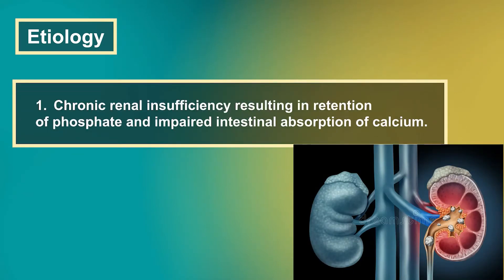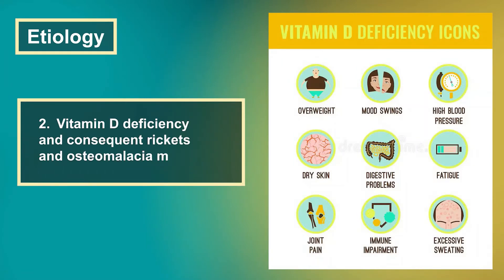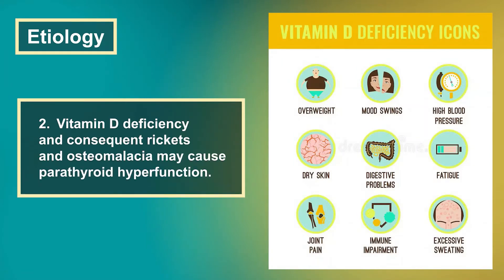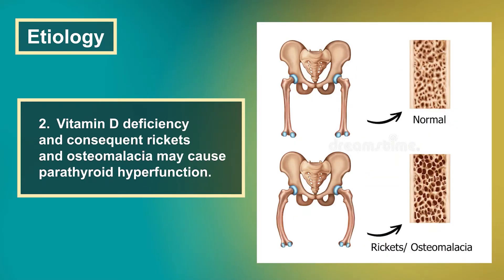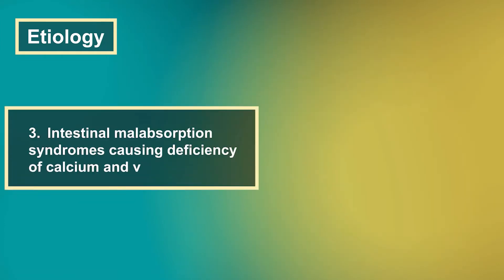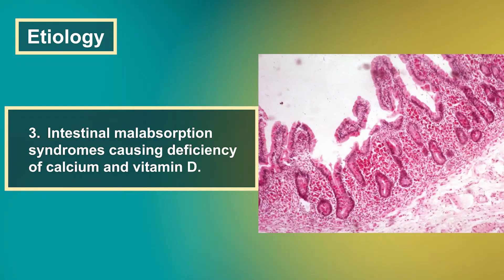First, chronic renal insufficiency resulting in retention of phosphate and impaired intestinal absorption of calcium. Second, vitamin D deficiency and consequent rickets and osteomalacia may cause parathyroid hyperfunction. Third, intestinal malabsorption syndromes causing deficiency of calcium and vitamin D.